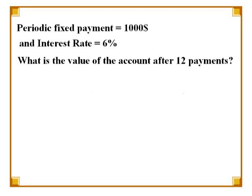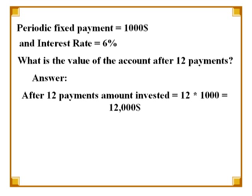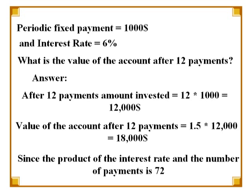Now, instead of having a fixed amount at the start as seen in all of the examples so far, let's assume you are making periodic fixed payments of $1,000 to an account growing at 6% interest, and you want to know what the value of the account is after 12 payments. This can be calculated pretty easily as shown. After 12 payments of $1,000, you have invested $12,000 in this account. Since the product of the interest rate and the number of payments is 72, the value of the account will be 1.5 times $12,000, or $18,000.